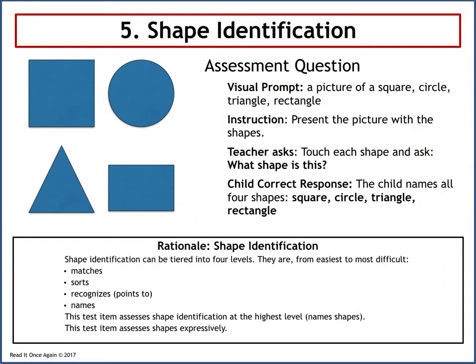The fifth skill assessed is shape identification. The visual prompt is a picture of a square, circle, triangle, and rectangle. The teacher touches each shape and asks: What shape is this? The child's correct response is to name all four shapes. The rationale: shape identification can be tiered into four levels from easiest to most difficult — matches, sorts, recognizes or points to, and names. The test item assesses shape identification at the highest level: names shapes. This test item assesses shapes expressively.